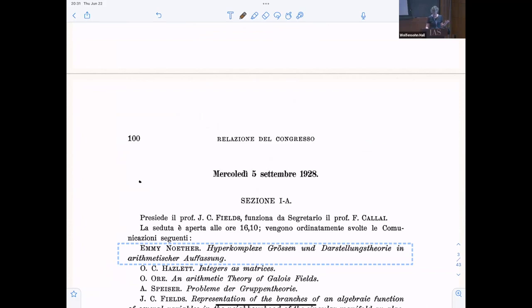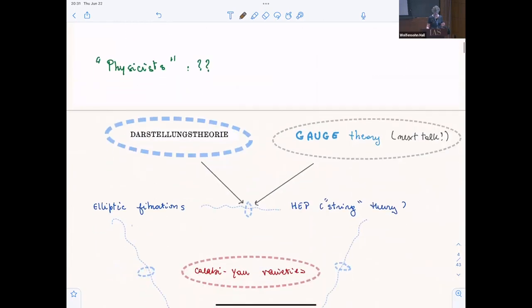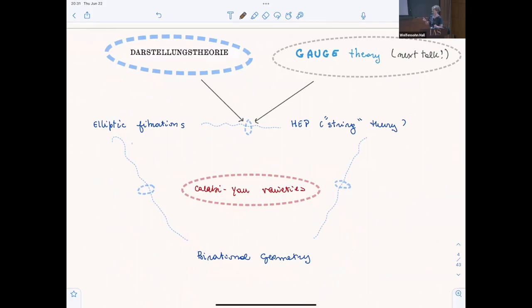From the title, I picked up this word, which should be representation theory. Together with her work on physicists, on conservation laws from which we can get gauge theory, I would like to think these are sort of rings that put together all the various topics I'll be talking about today: elliptic fibrations, high energy physics, string theory, birational geometry, and in the middle, Calabi-Yau varieties.